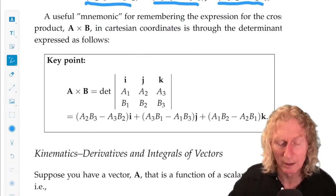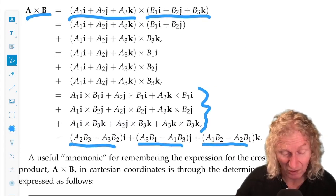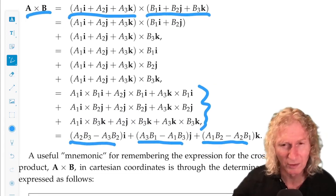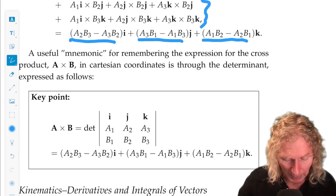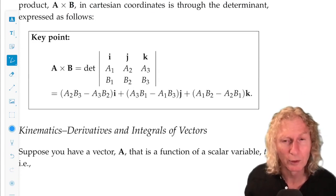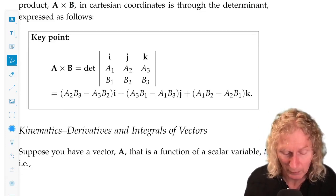Now, there is a handy mnemonic device for remembering how to do the cross product. I mean, this is a long calculation. For specific vectors, it's not so bad. But you get used to this, and you see the pattern. But here, this is not really a determinant. That's why I call it a mnemonic.